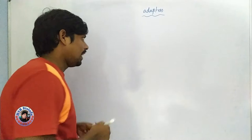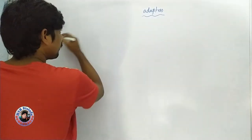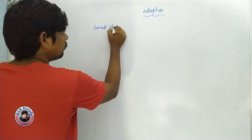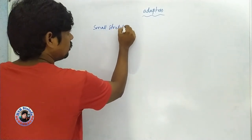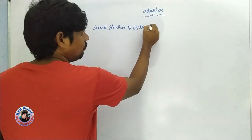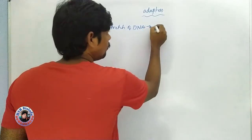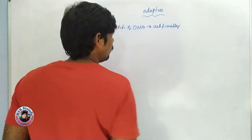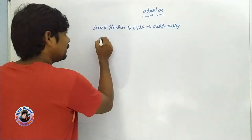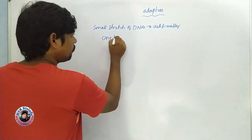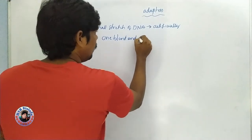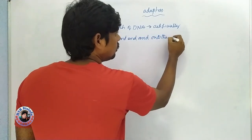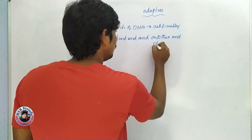An adapter is a small stretch of DNA which was created artificially in the laboratory. They have one blunt end and one sticky end.